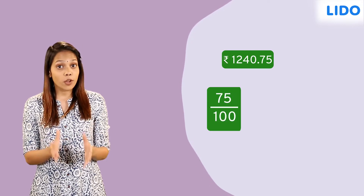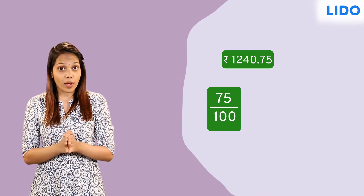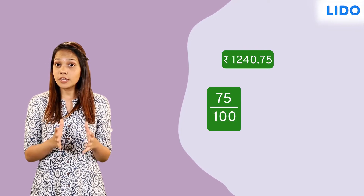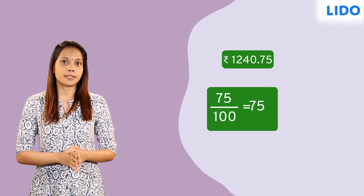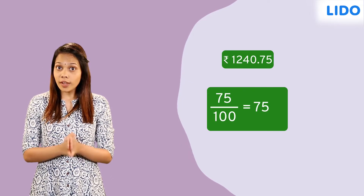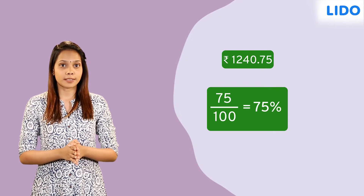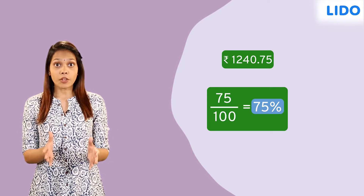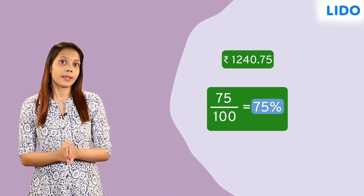Since the denominator in this fraction is 100, we can express the number in the numerator directly as a percentage. Thus, 75 over 100 is 75%. Therefore, 75% of 1 rupee is 75 paise.